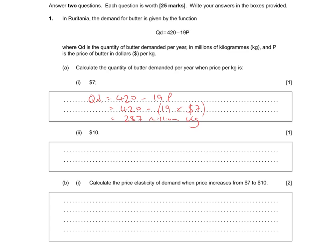The second question asks us what happens when the price increases to $10. So exactly the same method. Qd is 420 minus 19P, so 420 minus 19 times $10 now, and that gives us 230 million kilograms of butter.